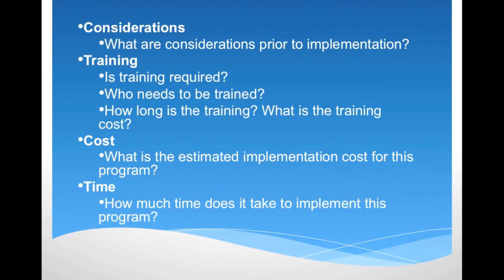Training cost and time are other important variables. The training section indicates who needs to be trained, if training is required, and training costs and length of training. The cost section provides a range of costs for implementing the program, including material fees. Here you may also see a statement regarding the cost effectiveness of the program as determined by the Washington State Institute for Public Policy. The time section refers to implementation time, addressing the time it takes to start up the program and the length of the program, including any additional booster sessions.